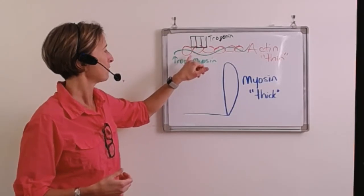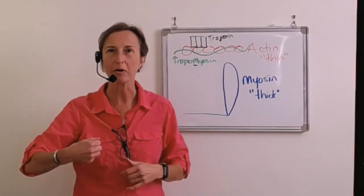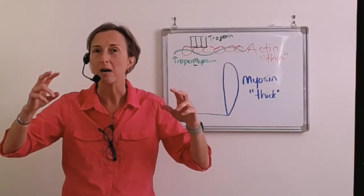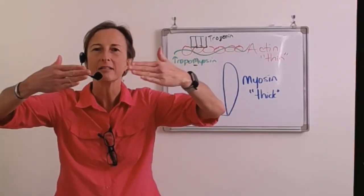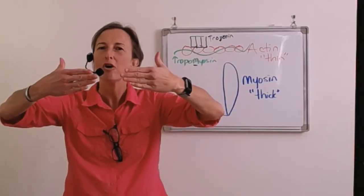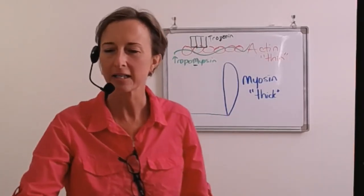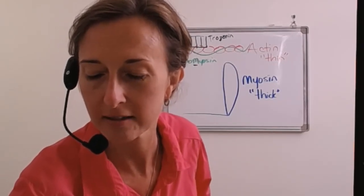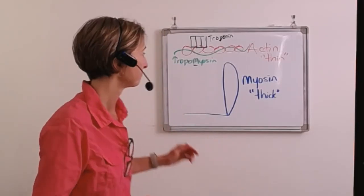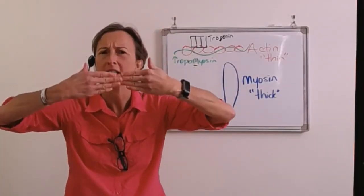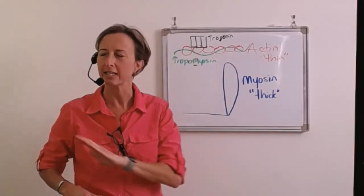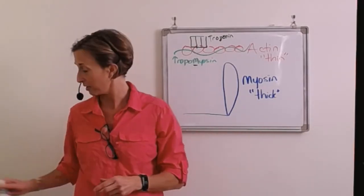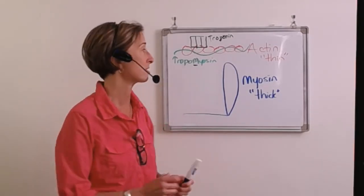So here's troponin and tropomyosin standing arm in arm next to actin. And tropomyosin, who is Mom, has her hands, her little protein hands, over actin's eyes. And she's blocking the binding site, the place where actin would be able to interact with myosin. So she's standing there like this. And troponin, Dad, is standing next to her. Now troponin is the thing that's going to respond to our very important ion, which is calcium.